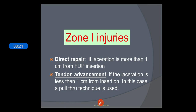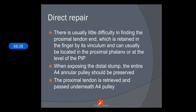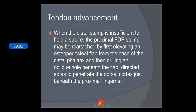For Zone 1 injuries, there are two types of repairs. First is direct repair, used when the laceration is more than 1 cm from the FDP insertion. Second is tendon advancement, used when the laceration is less than 1 cm from insertion. In direct repair, there is usually little difficulty finding the proximal tendon end, which is retained in the finger by its vinculum and can usually be located at the proximal phalanx. The entire A4 pulley should be preserved, and the proximal tendon is retrieved and passed under the A4 pulley.